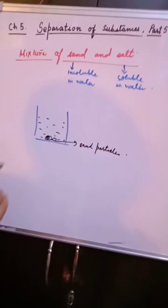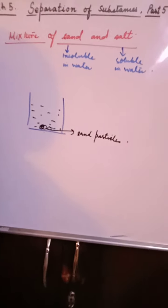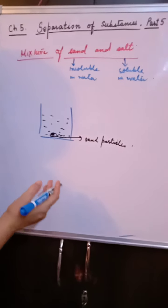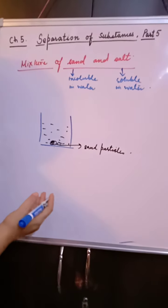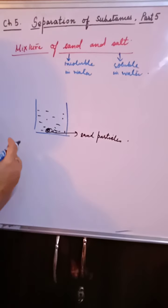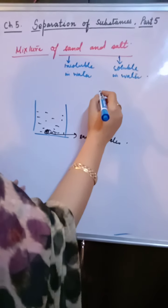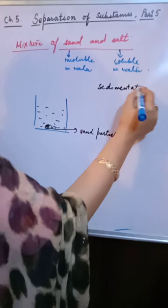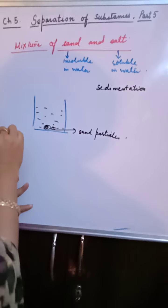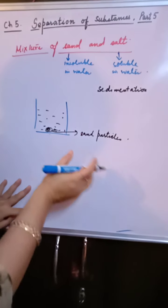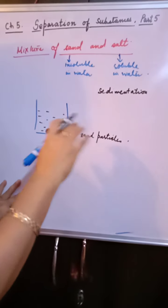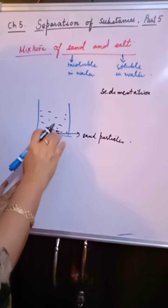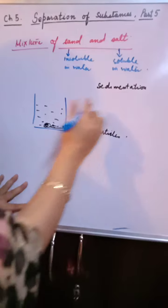Now you have two choices. Either you can do sedimentation and decantation, or you can do filtration if you have a filter paper. Obviously it will give you a better result. So one method is clear: the particles will settle down at the bottom, then the clear liquid will be poured into another beaker. What is left is sand particles.